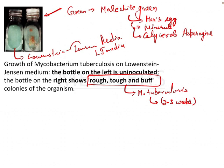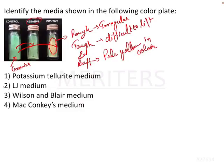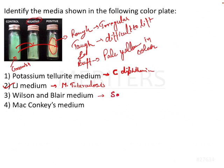That's why you need at least 6 weeks to declare the sample negative. So going back to the question, you will be able to identify that LJ medium is the correct option here. This medium is used for growing Mycobacterium tuberculosis, while potassium tellurite media is used for Corynebacterium diphtheriae, Wilson and Blair medium is used for growing Salmonella species, and we have already discussed McConkey's medium.